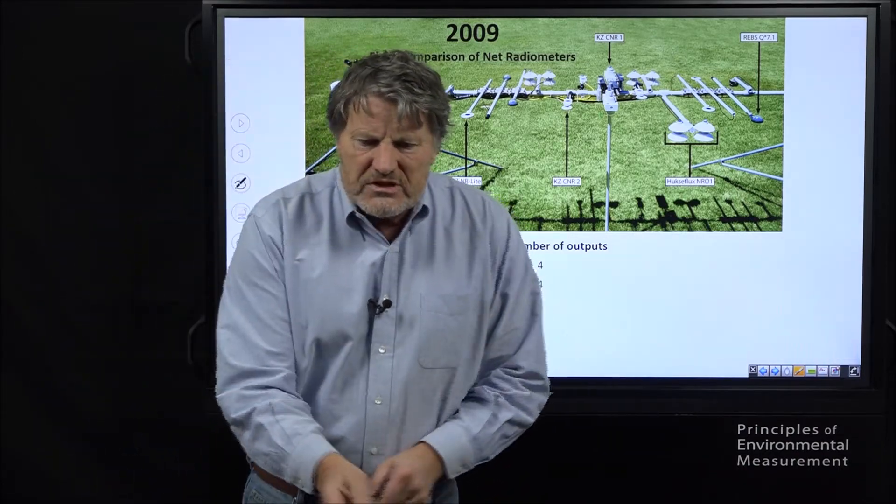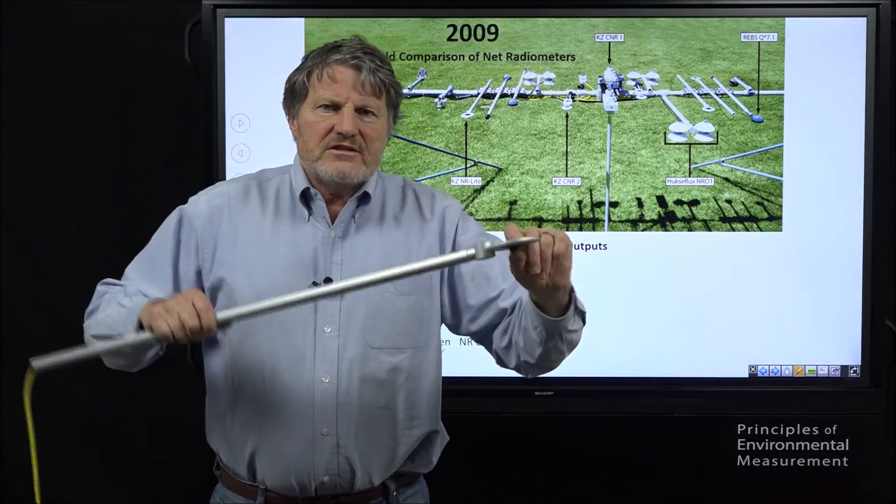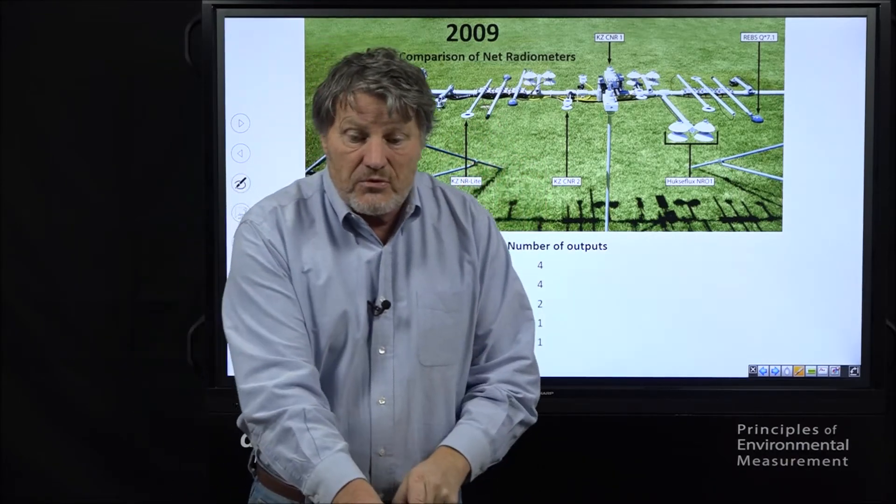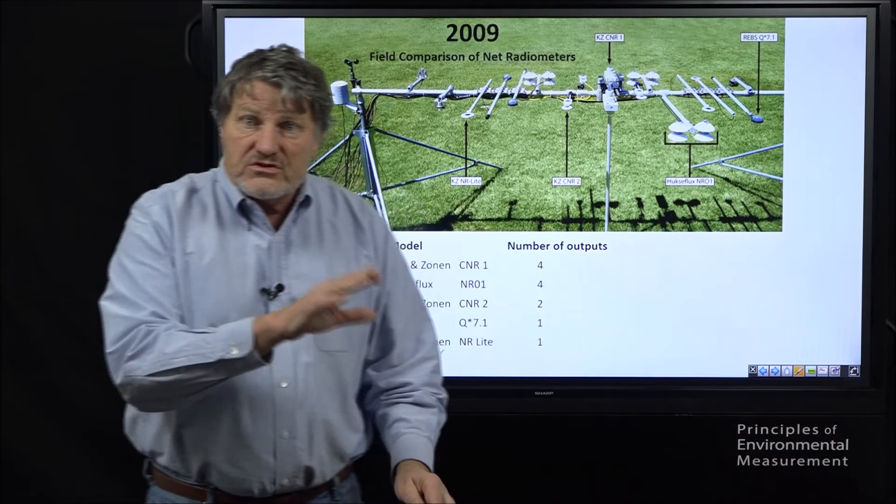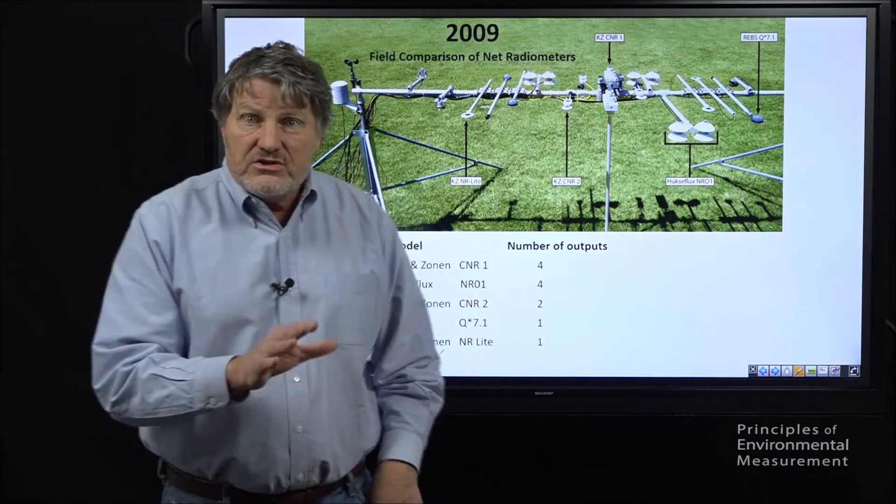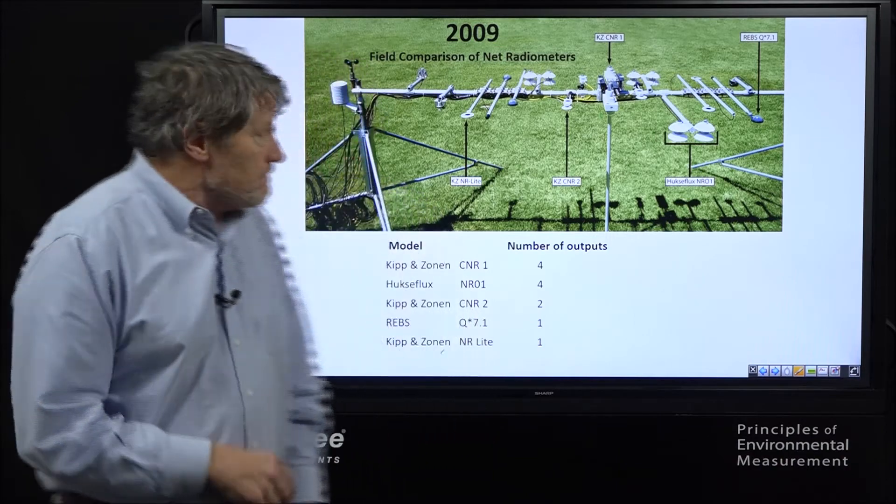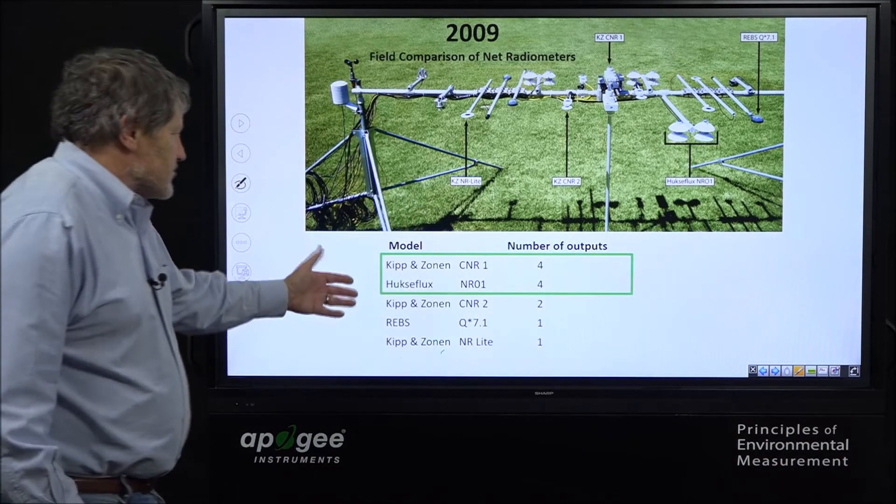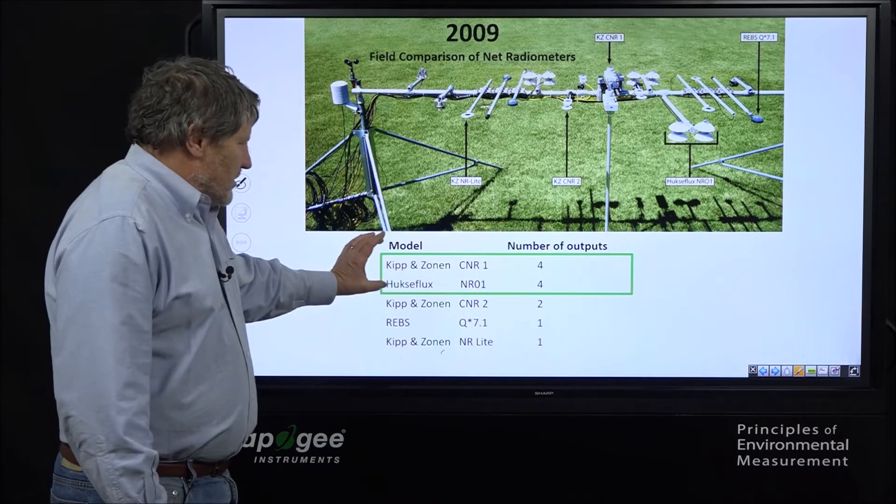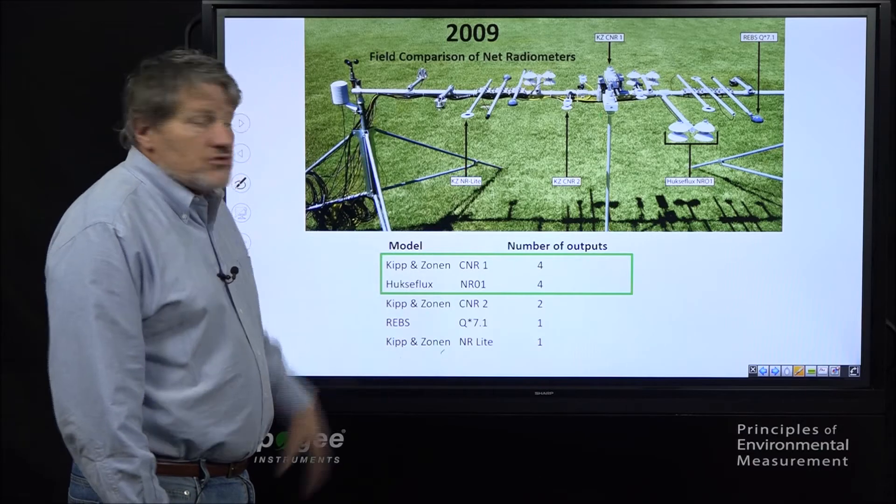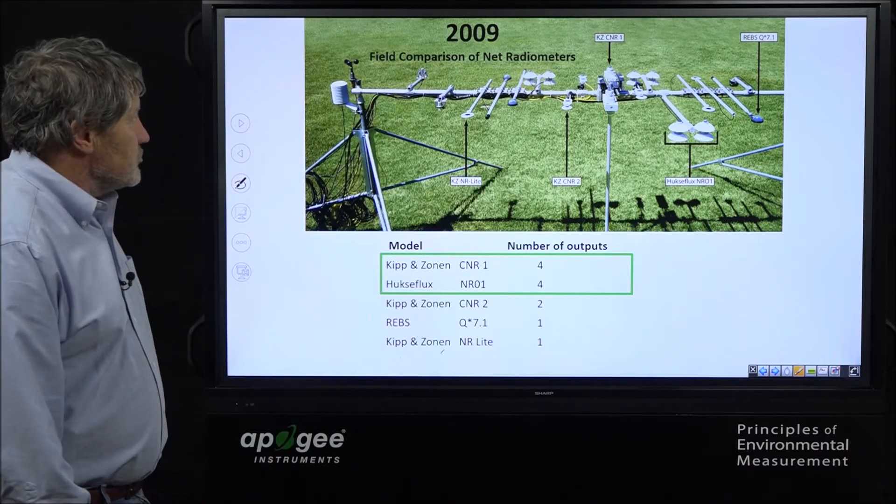But one of the absolutely clear things we found out about this was these instruments that had four outputs were fundamentally more accurate than the ones that only had one or two. Remember, these instruments that just have two sides like this. They just give you one number and they attempt to separate short-wave fluxes and long-wave fluxes. And that's very challenging to do. It's easier to measure them separately.